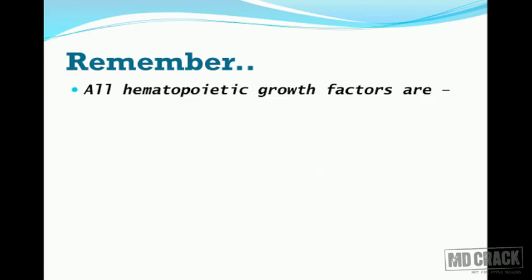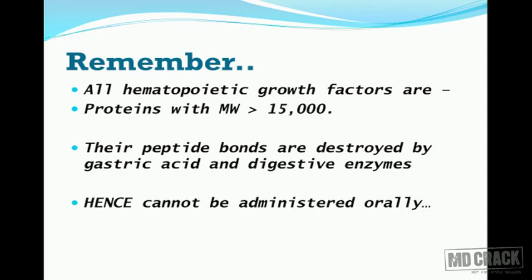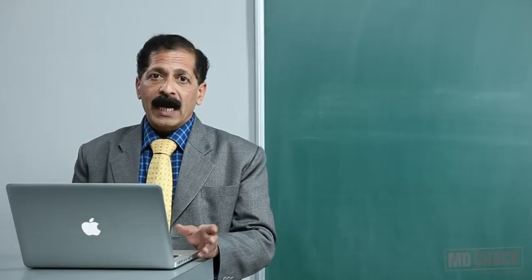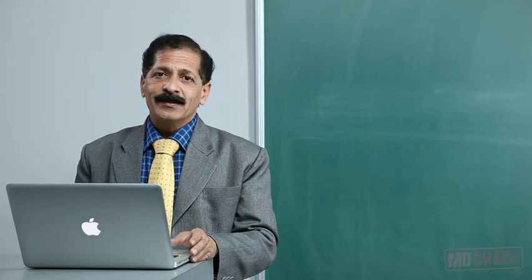All hematopoietic growth factors are proteins with molecular weight greater than 15,000. Their peptide bonds are destroyed by gastric acid and digestive enzymes, so they cannot be administered by oral route and must always be injected. This concludes the discussion on folic acid and hematopoietic growth factors.